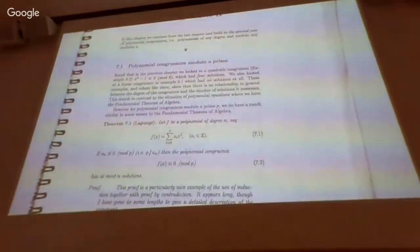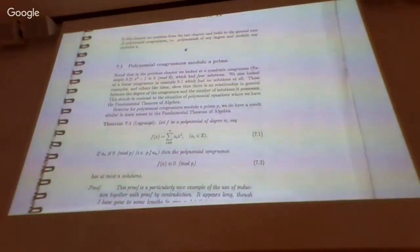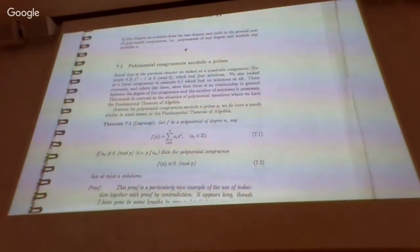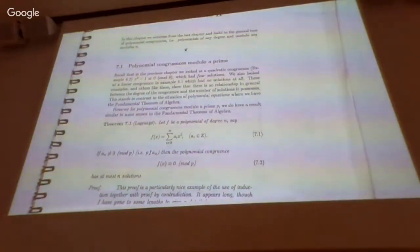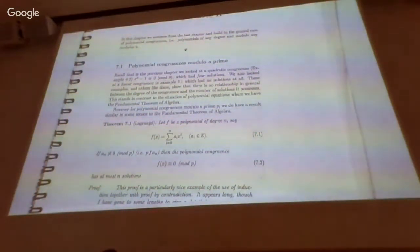But for now, we restrict to thinking about the case where the modulus is a prime. I did say before how the situation with polynomial congruences is kind of different to the situation with polynomial equations. With polynomial equations, we always know that the degree of the polynomial corresponds to the total number of solutions in the complex numbers — there's no such clear direct link for polynomial congruences.